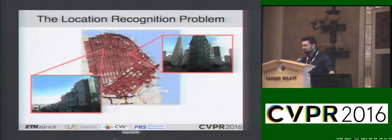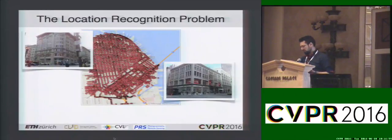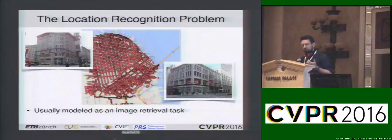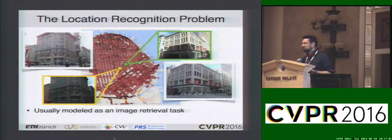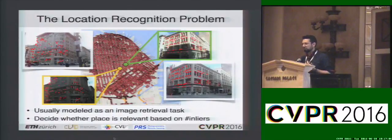We're considering the location recognition problem where we're given a database of geotagged images and a set of query images, and for each query we would like to know which place it depicts. This is usually modeled as an image retrieval task, where we first retrieve visually similar database images, fit a geometric transformation, and based on the number of inliers, decide whether two images depict the same place.